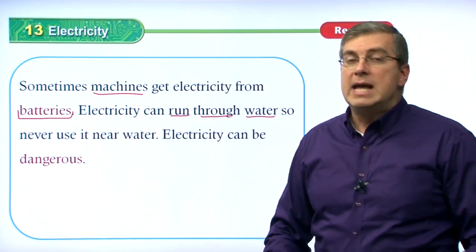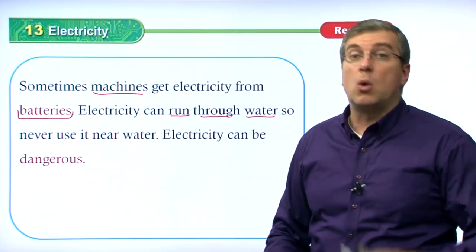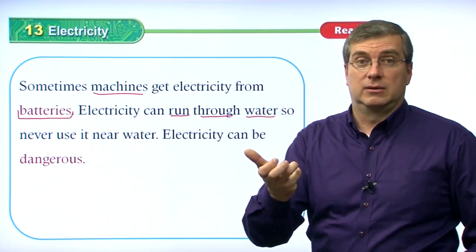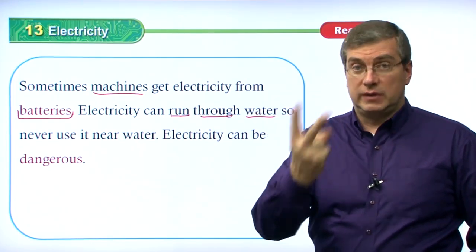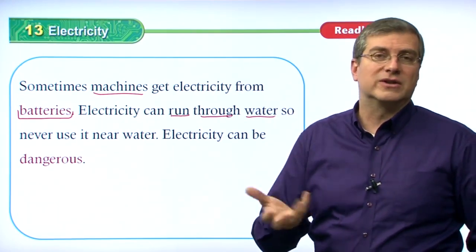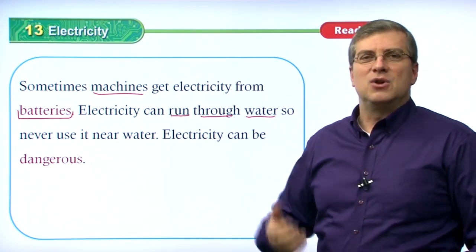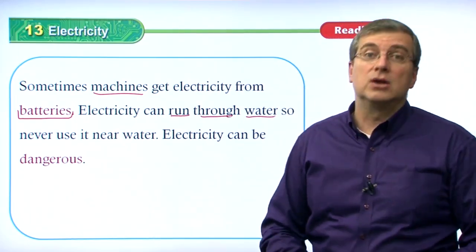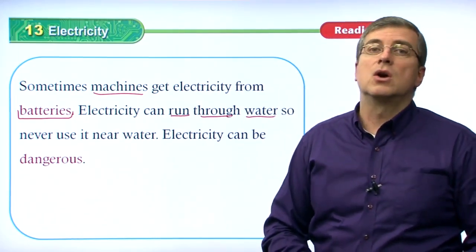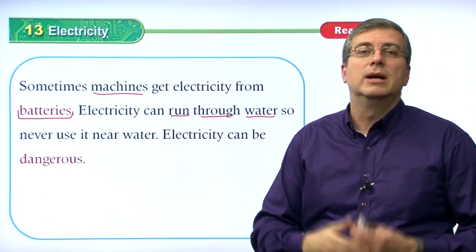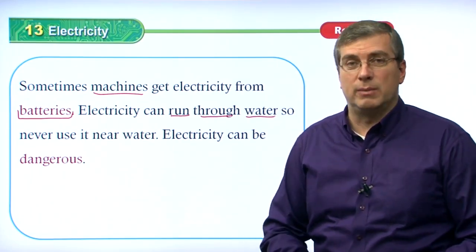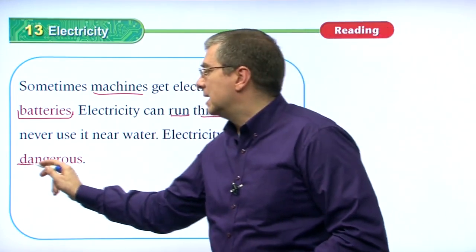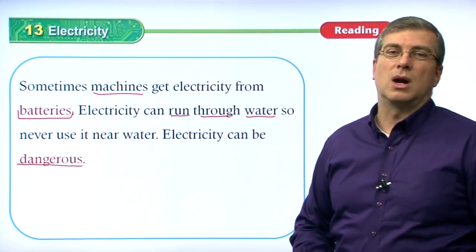Never take a shower, go into a bathtub, or a swimming pool carrying an electric device. It's very dangerous and you'll ruin the device. If you have a hairdryer connected to a cord in an outlet, that could be very, very dangerous. Don't use those things in the shower, bathtub, or swimming pool. Be careful because electricity can be dangerous, harmful, or unsafe.